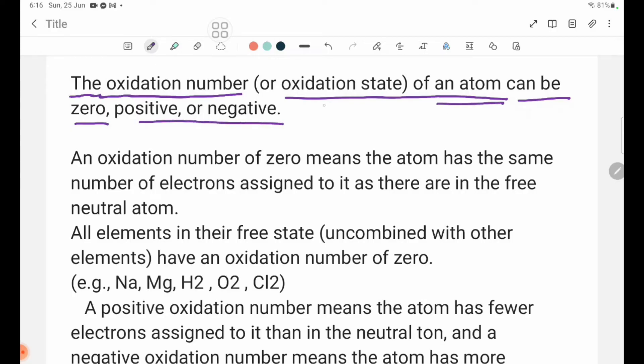An oxidation number of zero means the atom has the same number of electrons assigned to it as there are in the free neutral atom.